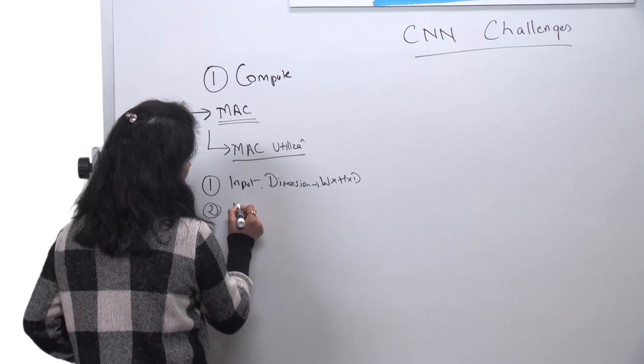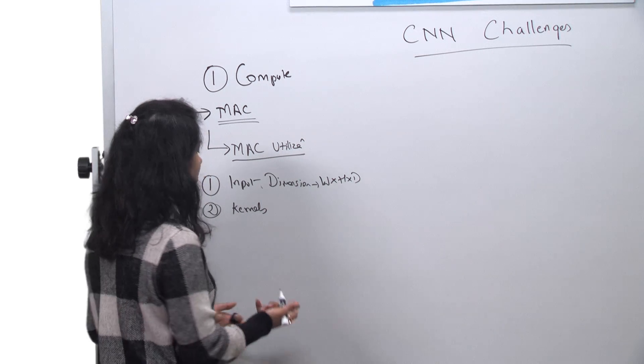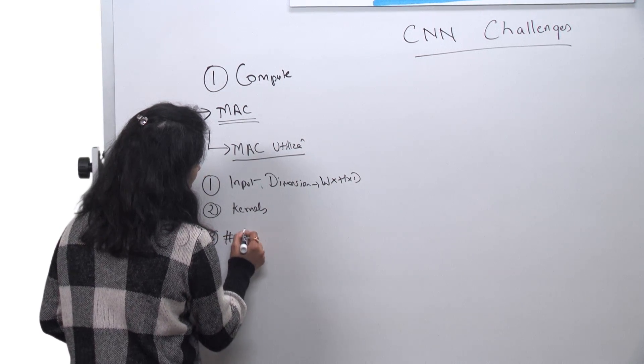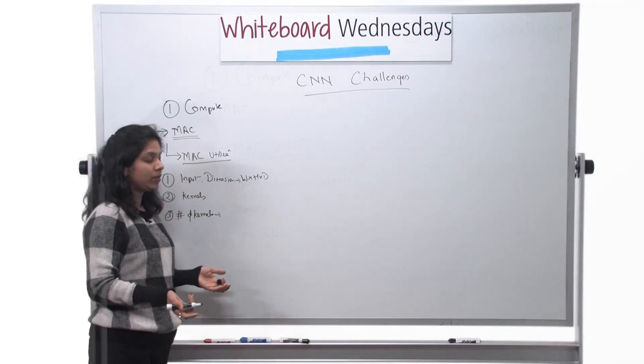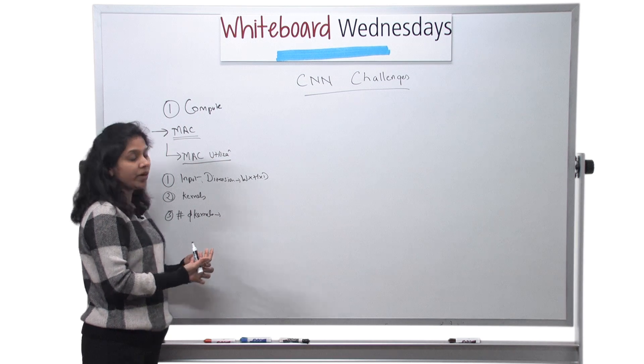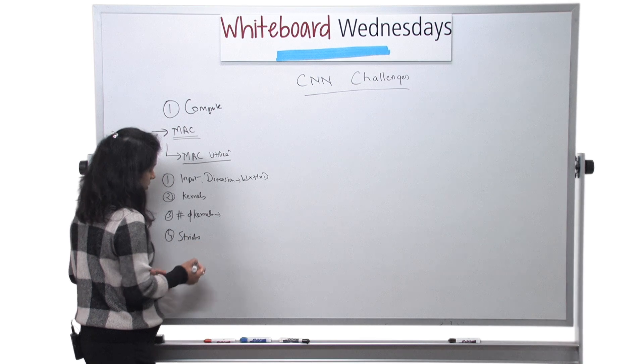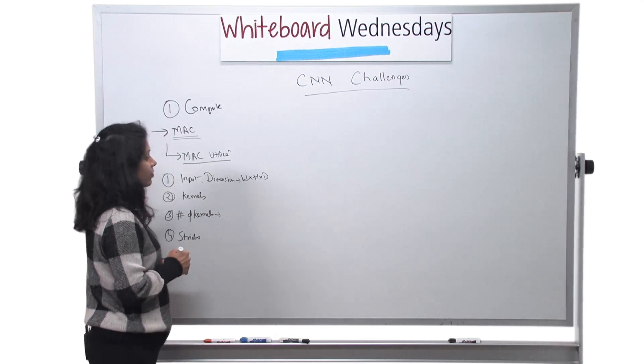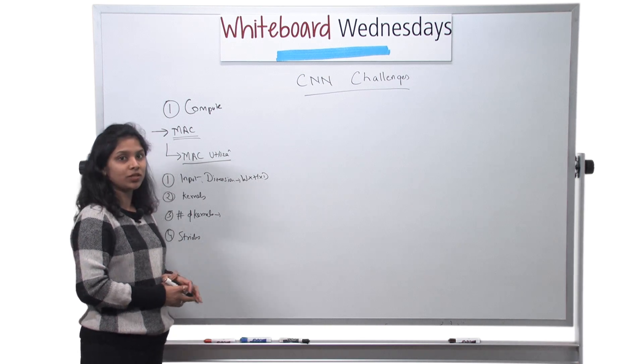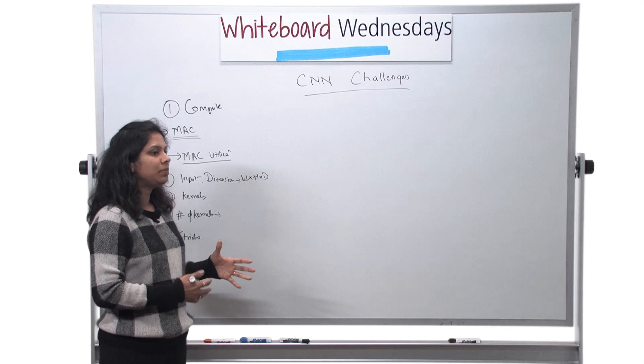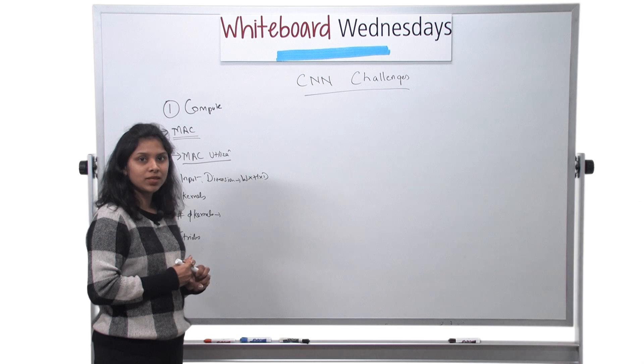Then we have kernels. Kernels we have seen can be anything from 1 by 1, 5 by 5, to 11 by 11s. And then there are something called number of kernels, which basically decides the output depth, the depth of the output. All these variables and something like strides, which add another dimension to the MAC utilization. So all these different factors can add different kind of impact on your MAC utilization, overall MAC utilization. And hence for that, people have come up with different vectorization schemes. So we are going to talk about three different schemes over here today.